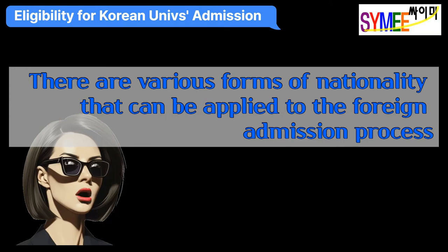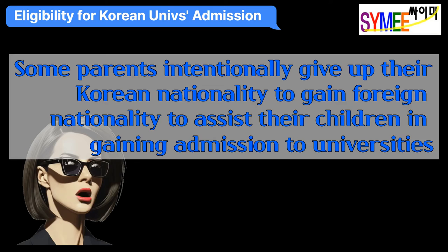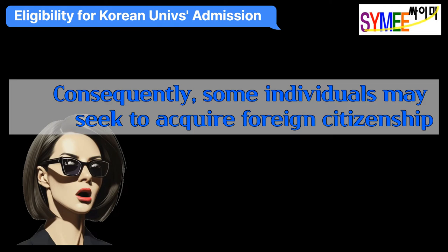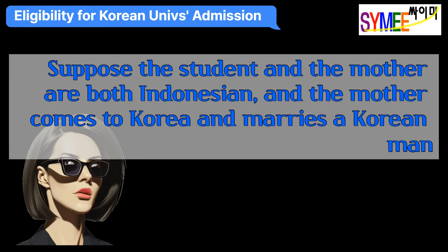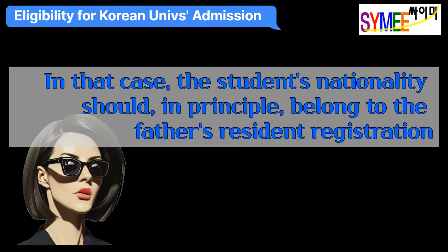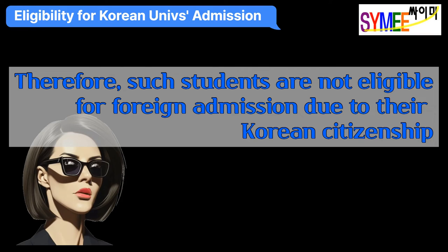There are various forms of nationality that can be applied to the foreign admission process. Some parents intentionally give up their Korean nationality to gain foreign nationality to assist their children in gaining admission to universities. Suppose the student and the mother are both Indonesian, and the mother comes to Korea and marries a Korean man. In that case, the student's nationality should, in principle, belong to the father's resident registration. Therefore, such students are not eligible for foreign admission due to their Korean citizenship.